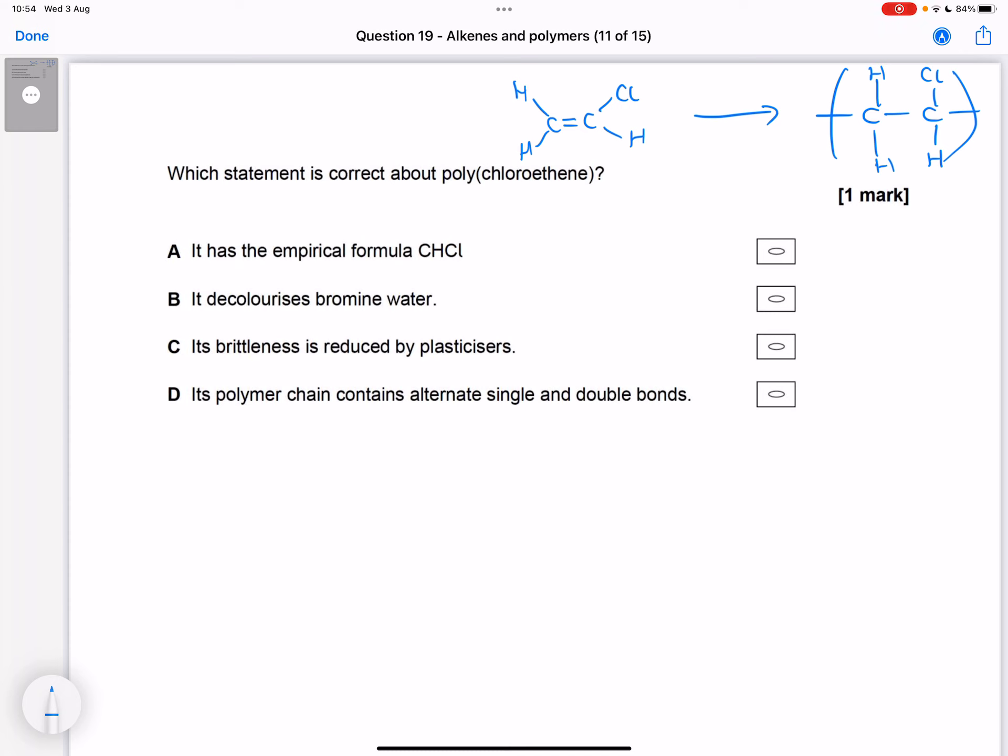Does it have the empirical formula CHCl? So its actual formula, it's repeating endlessly, but we've got two C's, three H's, and one Cl. That can't be simplified, so this is not correct.